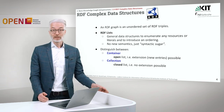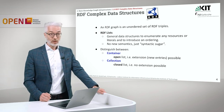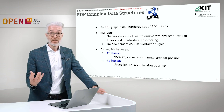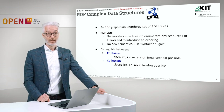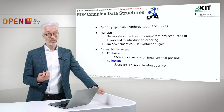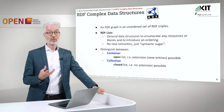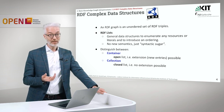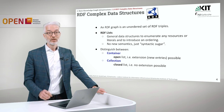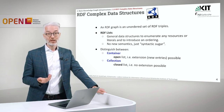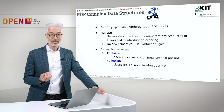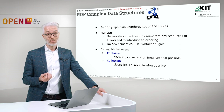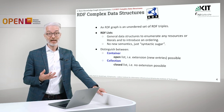An RDF graph is nothing else but an unordered set of RDF triples, so there is no order and no other thing to put structure in an RDF graph like that. But to put more structure in it and to also have the possibility to do some aggregations, the concept of so-called RDF lists has been developed. This is a general data structure to enumerate any resource or literals and to introduce an ordering. It's not something with new explicit semantics — it's just semantic sugar because you could also express it another way.